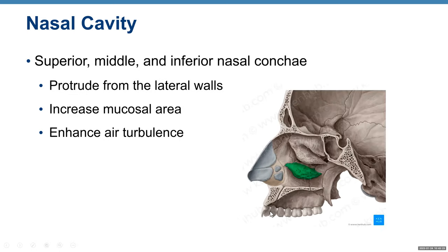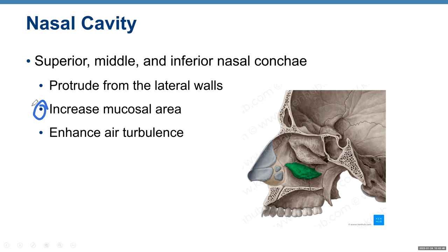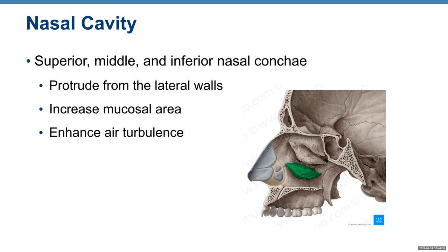Inspired air is warmed by plexuses of capillaries and veins, and sensory nerve endings trigger sneezing. On the lateral walls of the nasal cavity, there are three protrusions called nasal conchae — superior, middle, and inferior. They increase mucosal area and enhance air turbulence. When air enters the nasal cavity, it moves in a turbulent pattern, giving time to warm, moisten, and clean the air by trapping bacteria, dust, and debris in mucus.